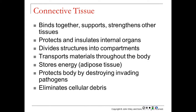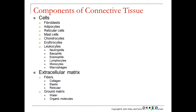Connective tissues bind structures together, support and strengthen other tissues. Their major functions include protection, insulation of internal organs, dividing structures into compartments, transporting materials through the body, storing energy, destroying pathogens, and eliminating cellular debris. Several cell types exist in connective tissue: fibroblasts, adipocytes, reticular cells, mast cells, chondrocytes, erythrocytes, and leukocytes including neutrophils, basophils, eosinophils, lymphocytes, monocytes, and macrophages.